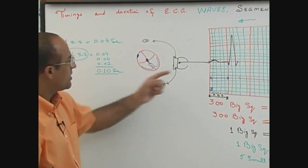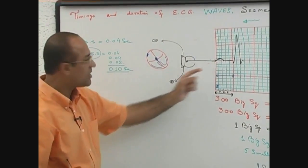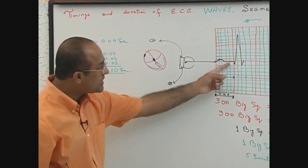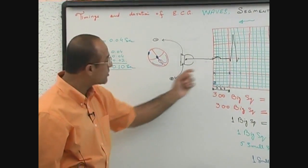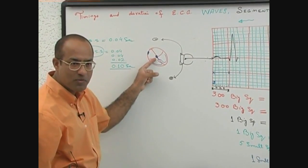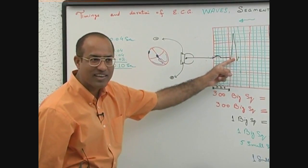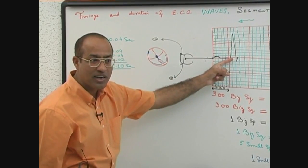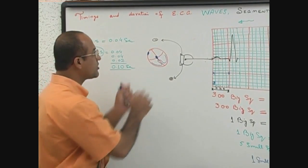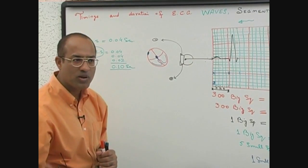Now we can correlate: if P wave is on 2 and a half small squares, atrial depolarization spread was 0.1 second. If PR segment is 2 and a half small squares, current was held in AV node for 0.1 second. If QRS complex is drawn over 2 and a half small squares, it means current released from AV node and spread over the ventricular tissue took 0.1 second.